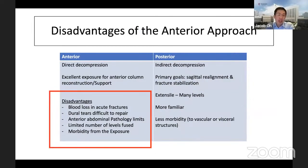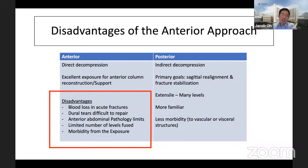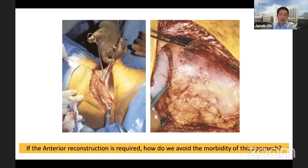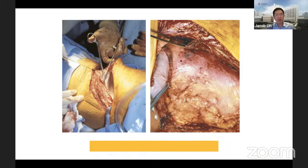Going from the front is not routine, and there are reasons for that. The disadvantages: blood loss in acute fractures can be significant. Dural tears are very hard to repair because it's so deep. As spine surgeons, we're not very familiar with abdominal pathology - what if you encounter a major bleed? It's beyond your control. When you do an anterior procedure, usually you can only do one or two-level corpectomies - you can't do multiple levels. The morbidity of exposure is one of the major reasons we wanted to move away from this. So if anterior reconstruction is really required, how do we avoid the morbidity of this approach? Can we do this all MIS? That's the basis of my talk today.